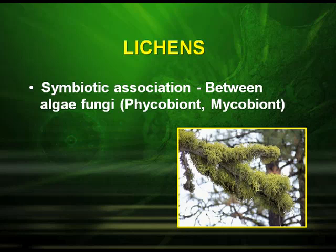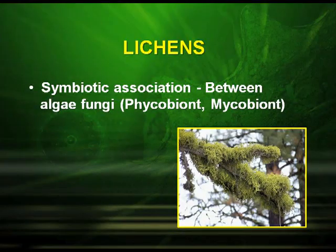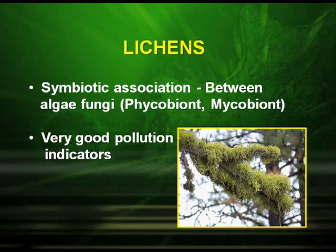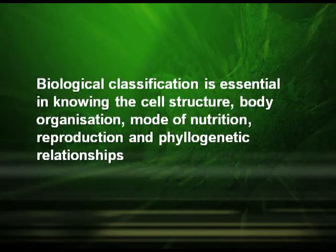Lichens are the symbiotic association between algae and fungi. The algal component is known as the Phycobiont and the fungal component is known as the Mycobiont. Their relationship is known as a symbiotic relationship. They are very good pollution indicators. Biological classification is essential in knowing the cell structure, body organization, mode of nutrition, reproduction, and phylogenetic relationship.